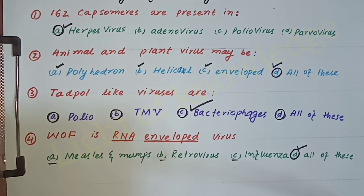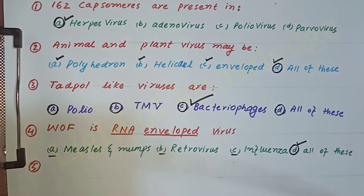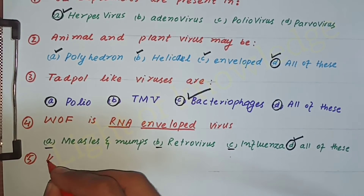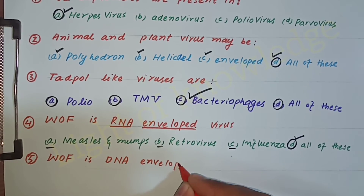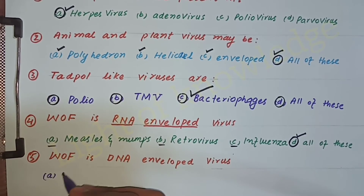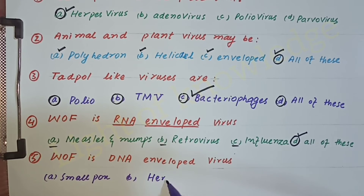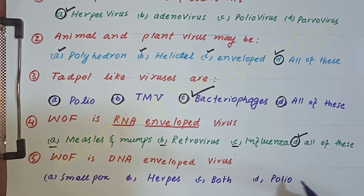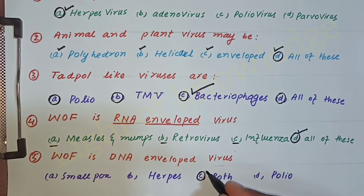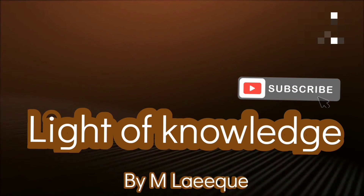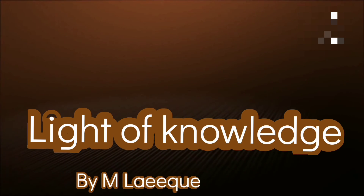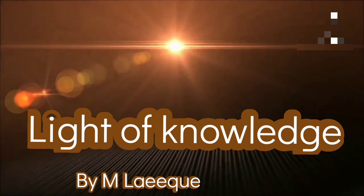Question number five, the last MCQ: Which one of the following is a DNA enveloped virus? A DNA enveloped virus has genetic material in the form of DNA and its capsid is covered by an envelope from the host plasma membrane. The answer is both — smallpox and herpes are DNA enveloped viruses. See you next time.